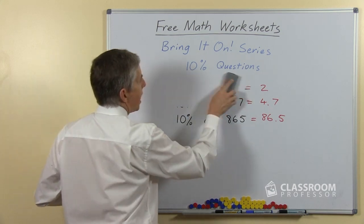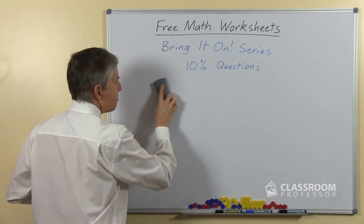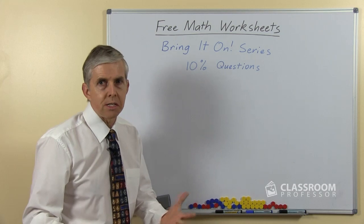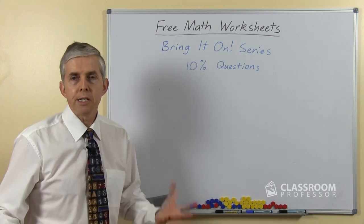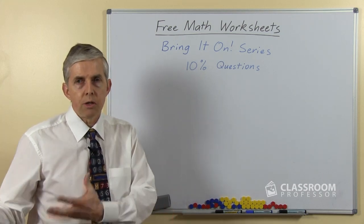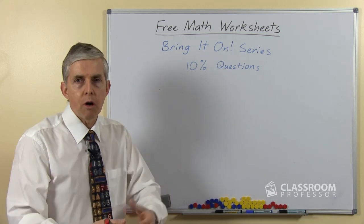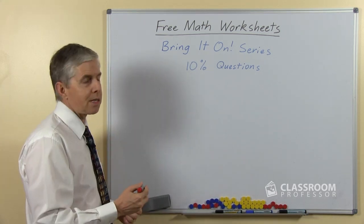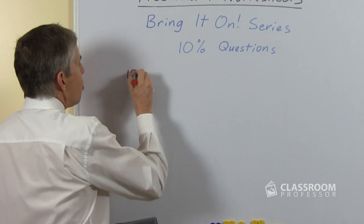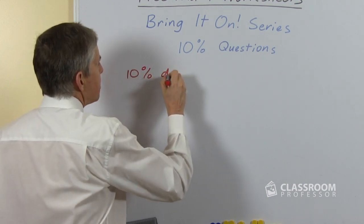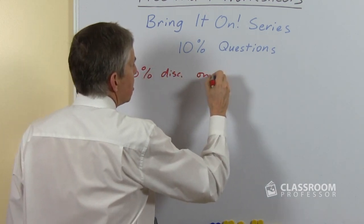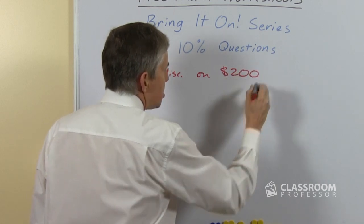Alright, then after those questions we have some discount questions. So percentages are useful in a retail setting for shop owners to offer people a discount. So we're still using 10% and we're going to say what would we have if it was a 10% discount on $200.